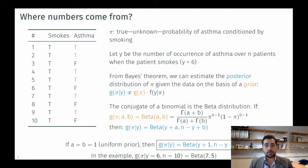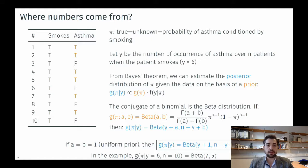In order to do that, we start from the data and consider y, the number of occurrences of asthma over n patients when the patient smokes. In this case we have y equal to 6. From Bayes' theorem we can estimate the posterior distribution of pi given y, provided we give prior information. Because pi is distributed as a binomial and the conjugate of the binomial is a beta distribution, we choose a beta prior and the posterior will also be a beta distribution. If we choose a beta prior with parameters a and b, the posterior is beta with parameters y+a and n−y+b.